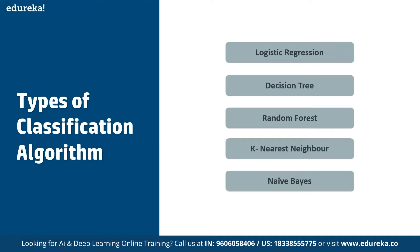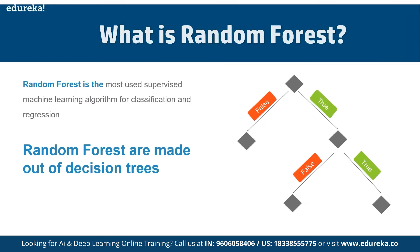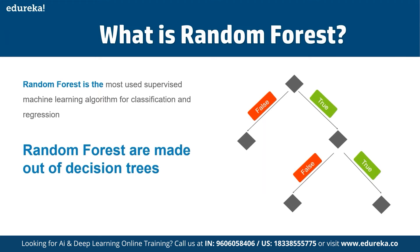In terms of types of classification algorithms, we have logistic regression, decision tree, random forest, K-nearest neighbors, and Naive Bayes. Now let's understand random forest: it is a supervised classification and regression algorithm.